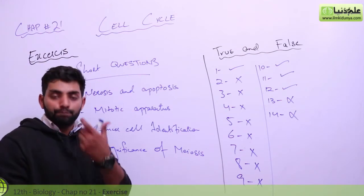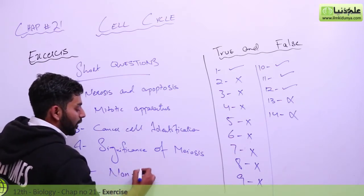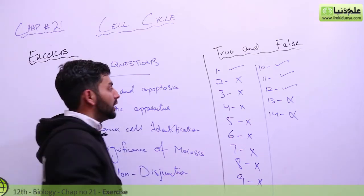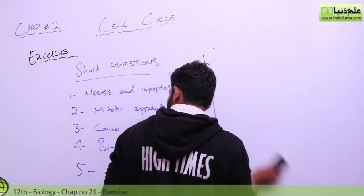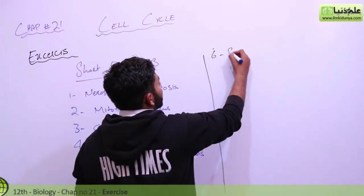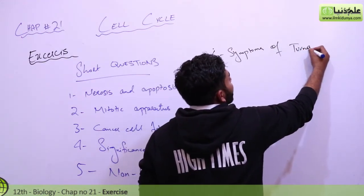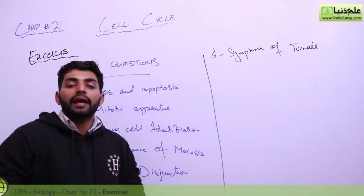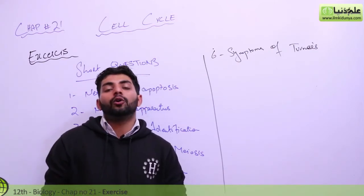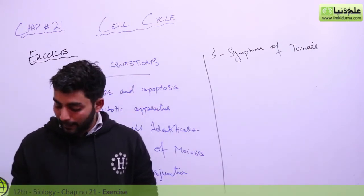Fifth question on chromosomal non-disjunction: non-disjunction is the failure of chromosomes to separate properly. Sixth question: what are the symptoms of Turner's syndrome? There are several symptoms — the body shows abnormal development, mental retardation, and squinted eyes are among the problems of Turner's syndrome.